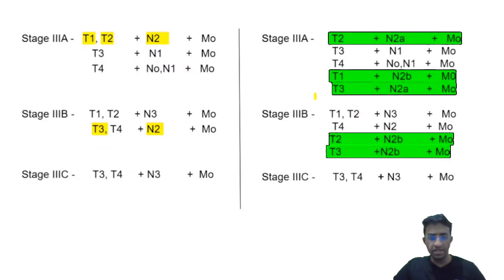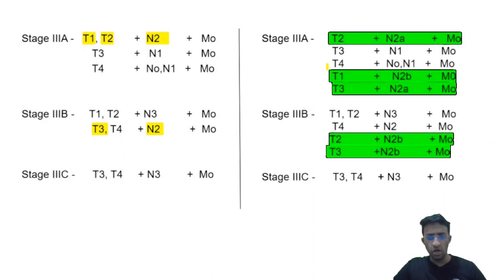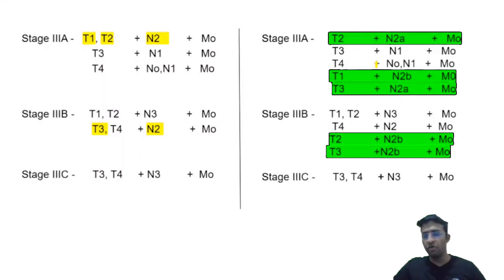These are the major changes from the 8th to the 9th edition. Others remain the same. In stage 3A, we also have T3, N1, M0 and T4, N0 or N1, M0.